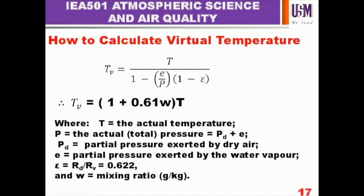This is the equation to determine the virtual temperature: T subscript V equals the actual temperature divided by one minus e over P times epsilon. It is not exponential — it is E, representing epsilon. P is always our total pressure, which for dry air includes E, the partial pressure of the water vapour in the air. Epsilon is the ratio of the gas constant for dry air to the gas constant for water vapour.